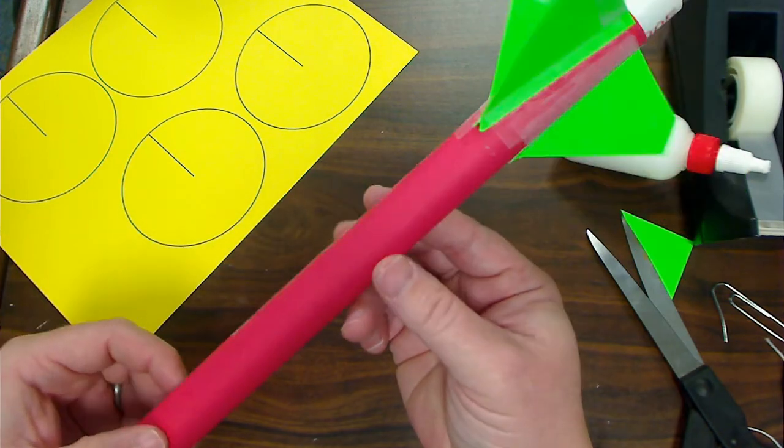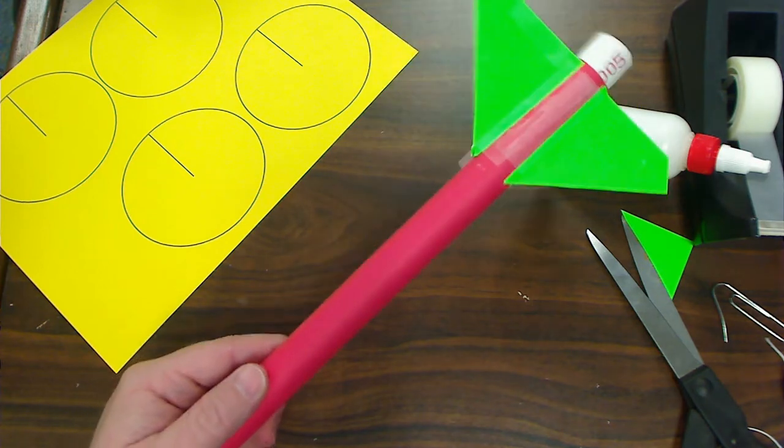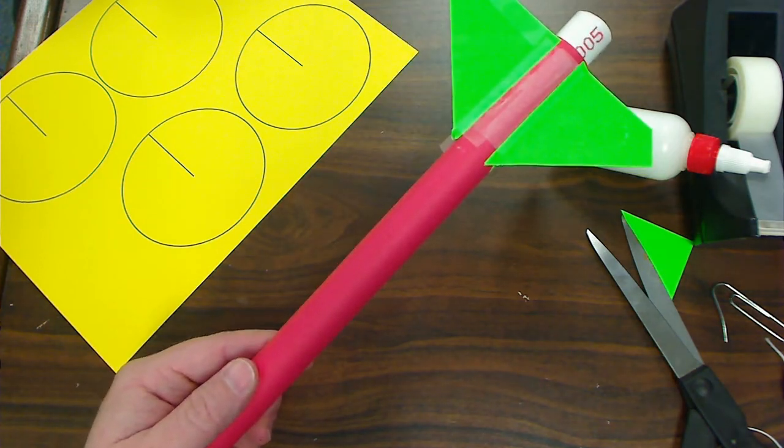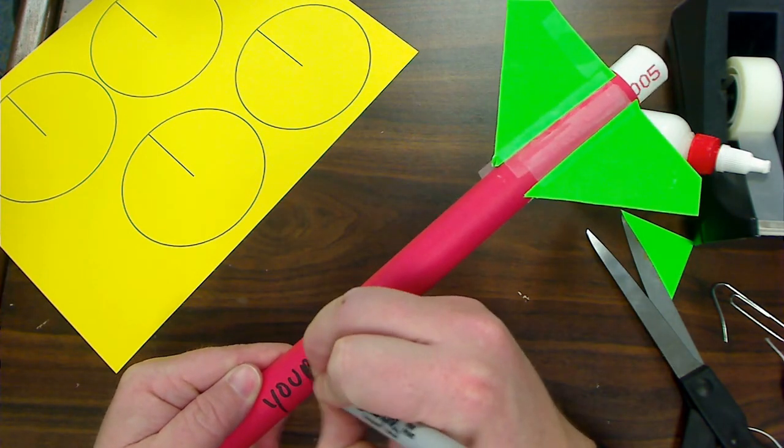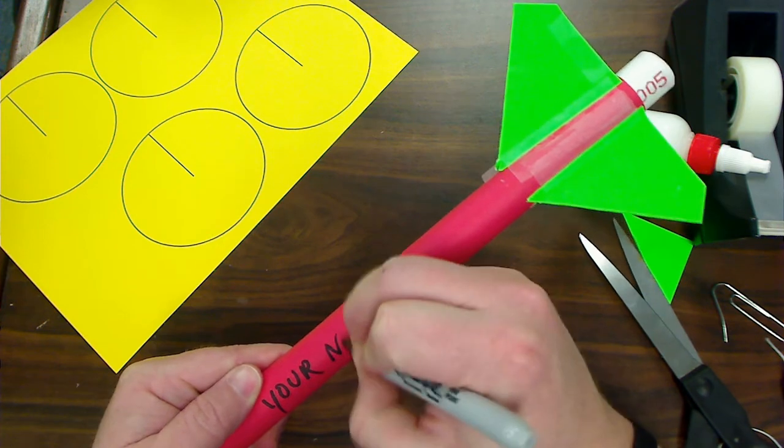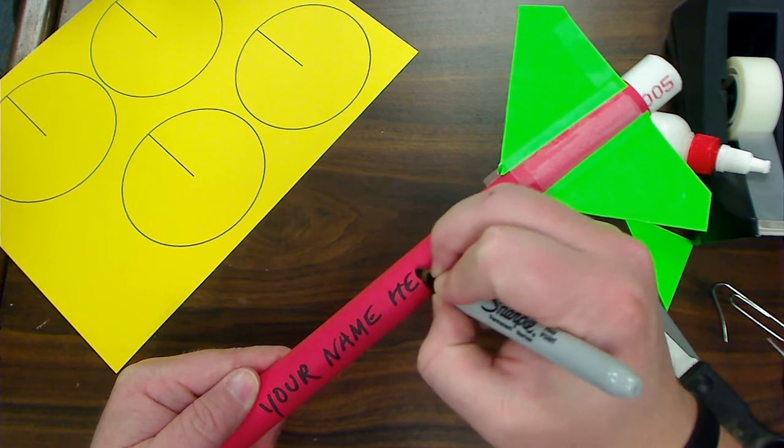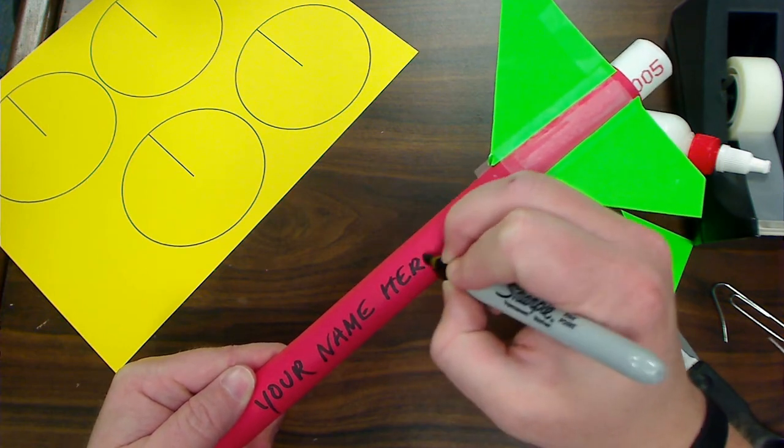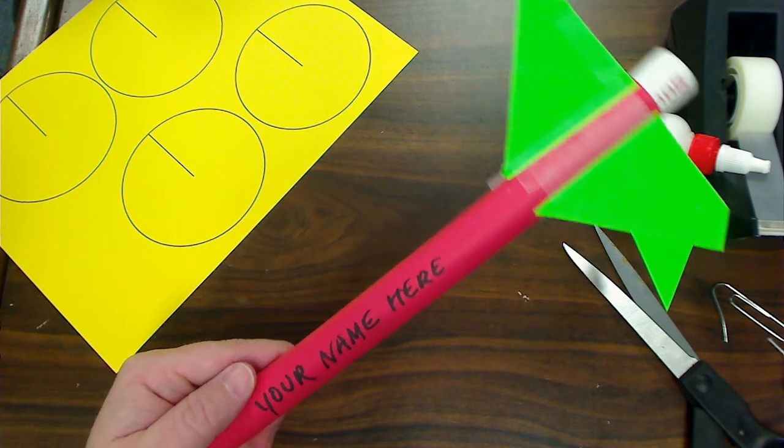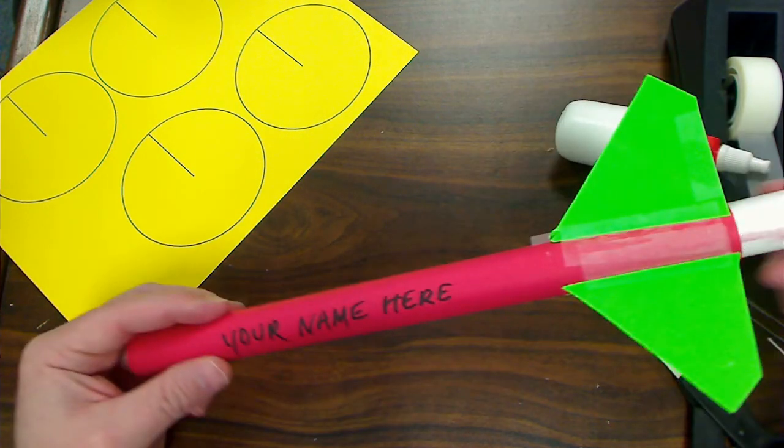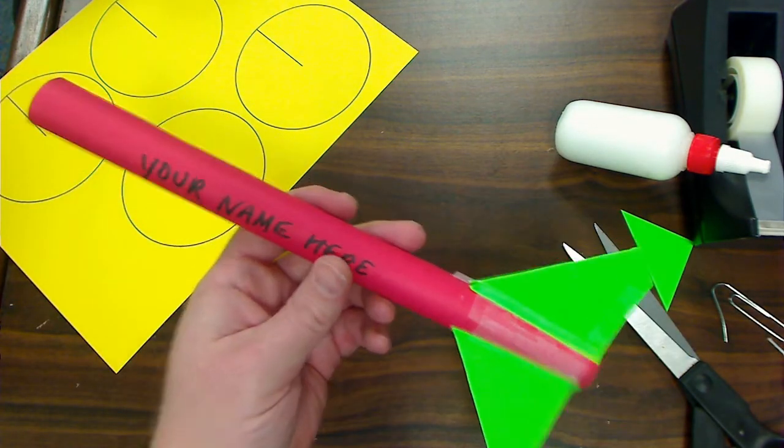Now we have all three of our wings on our rocket. Now is as good a time as any to add your name here before we remove the PVC pipe from the inside of it. And you can just go ahead and slide that out. And you have the bottom half of your rocket.